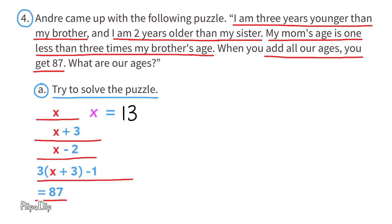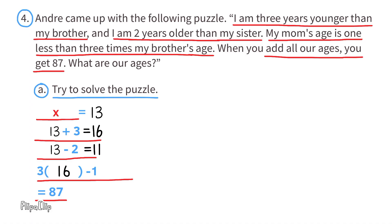Substituting x = 13: Andre's age is 13, his brother's age is 13 + 3 = 16, his sister's age is 13 − 2 = 11, and his mother's age is 3 × 16 − 1 = 47. Checking: 13 + 16 + 11 + 47 = 87. ✓